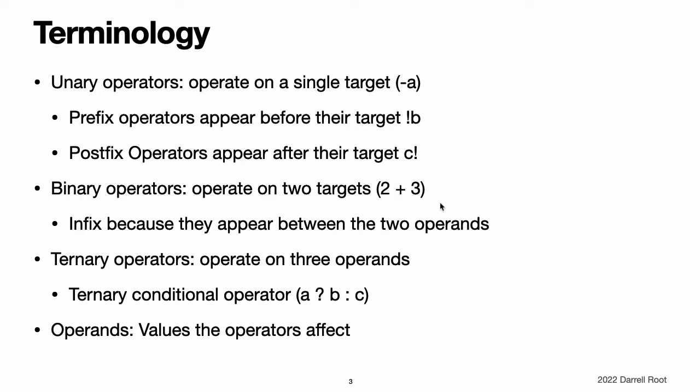Binary operators operate on two targets, such as 2 plus 3, and are infix because they appear between their two targets. Ternary operators operate on three targets. Like C, Swift has only one ternary operator, the ternary conditional operator. The values that operators affect are operands. In the expression 1 plus 2, the plus symbol is an infix operator, and its two operands are the values 1 and 2.